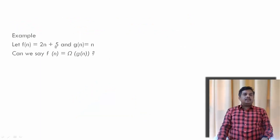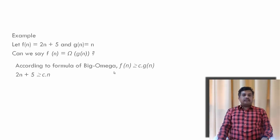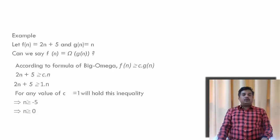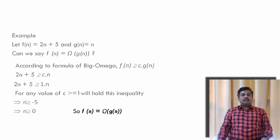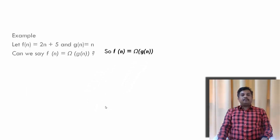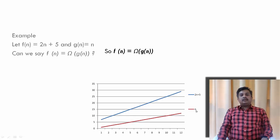Let us see the example. Let f(n) = 2n + 5 and g(n) = n. Can we say f(n) = Ω(g(n))? According to the formula of Big Omega, f(n) must be greater than or equal to c·g(n), meaning 2n + 5 ≥ c·n. We need to determine the value of c. This inequality holds for c = 1. Substituting the minimum value c = 1, we get n ≥ -5. Since c and n must be positive, we write n ≥ 0. So we can say f(n) is Ω(g(n)). On the graph the red line is g(n) and the blue line is f(n); for all values of n, g(n) is always less than or equal to 2n + 5.